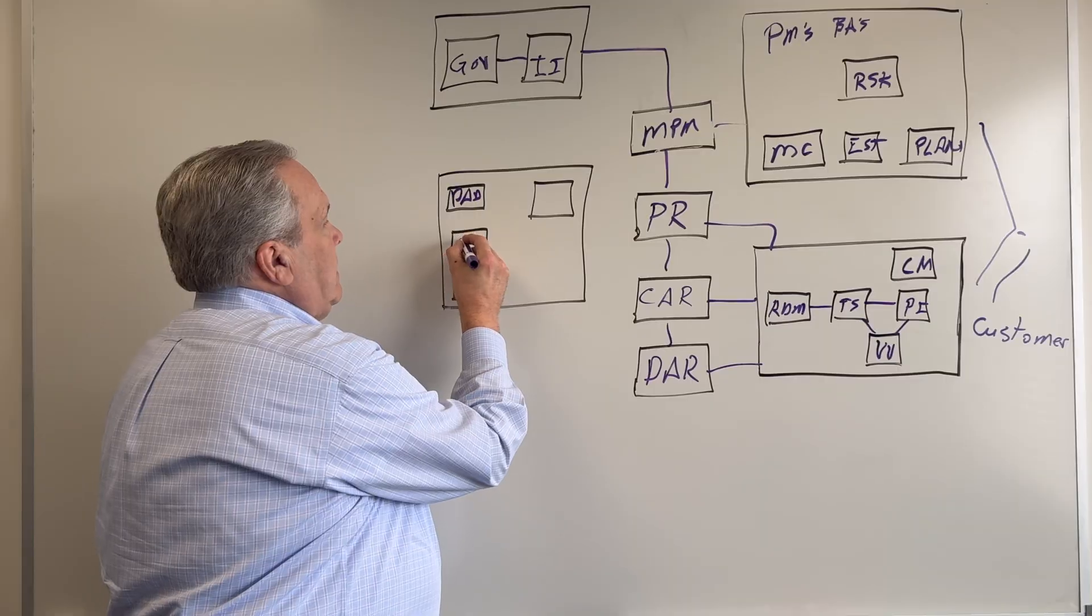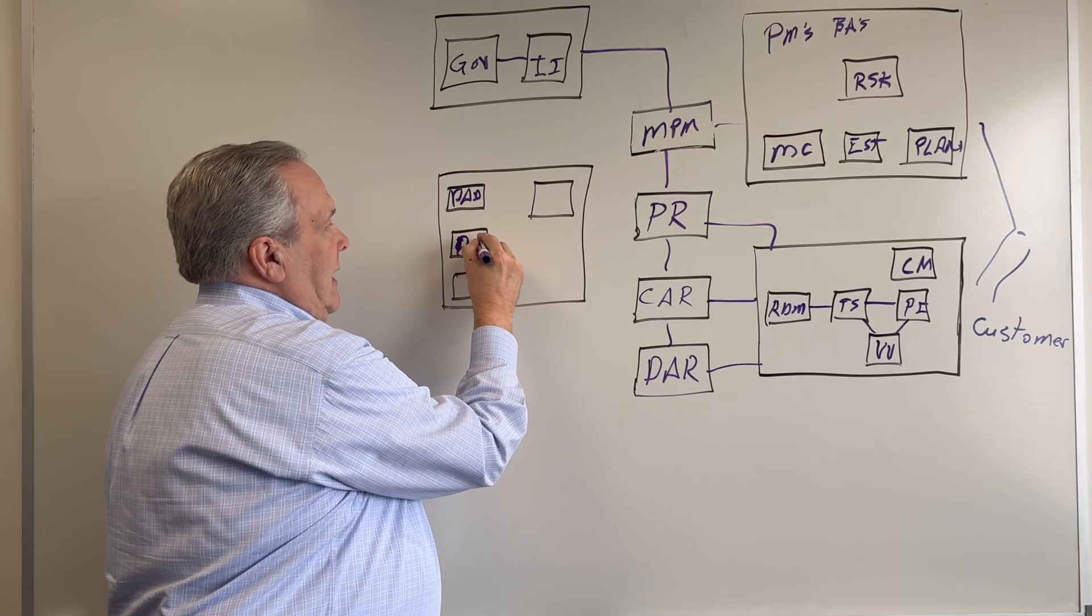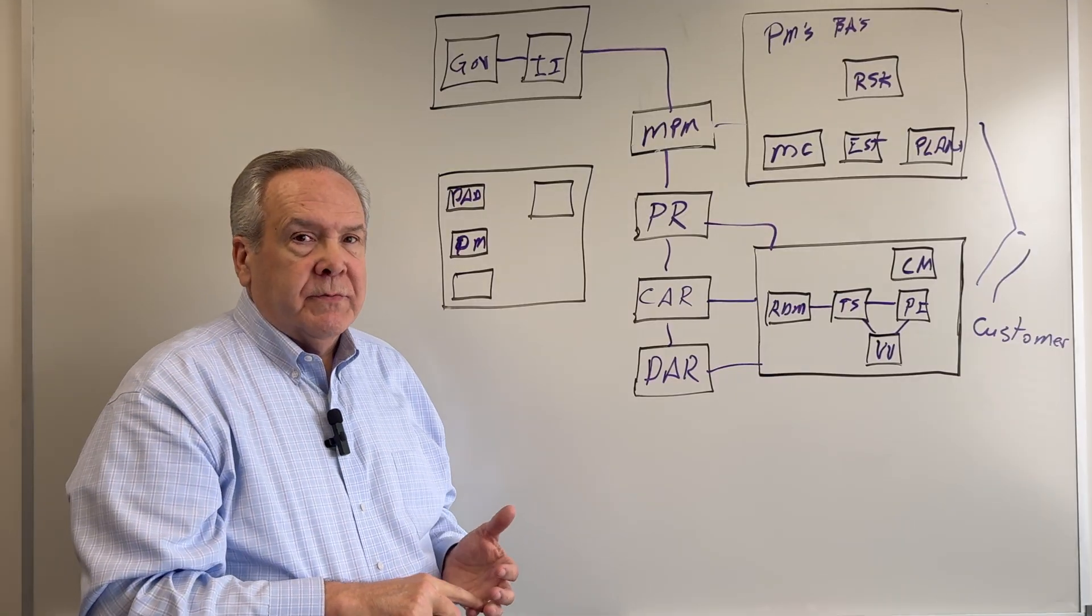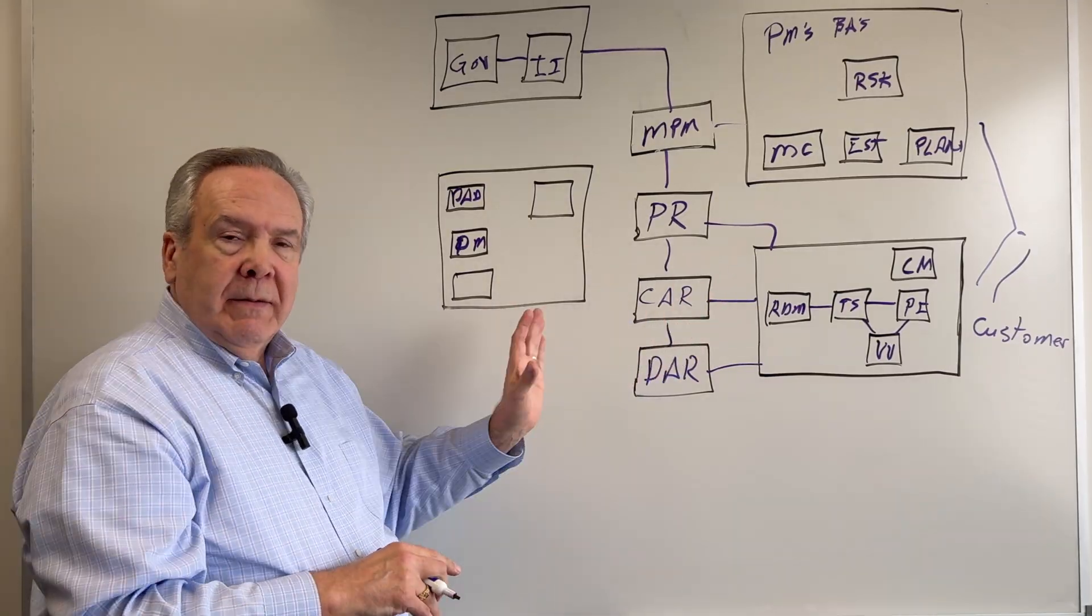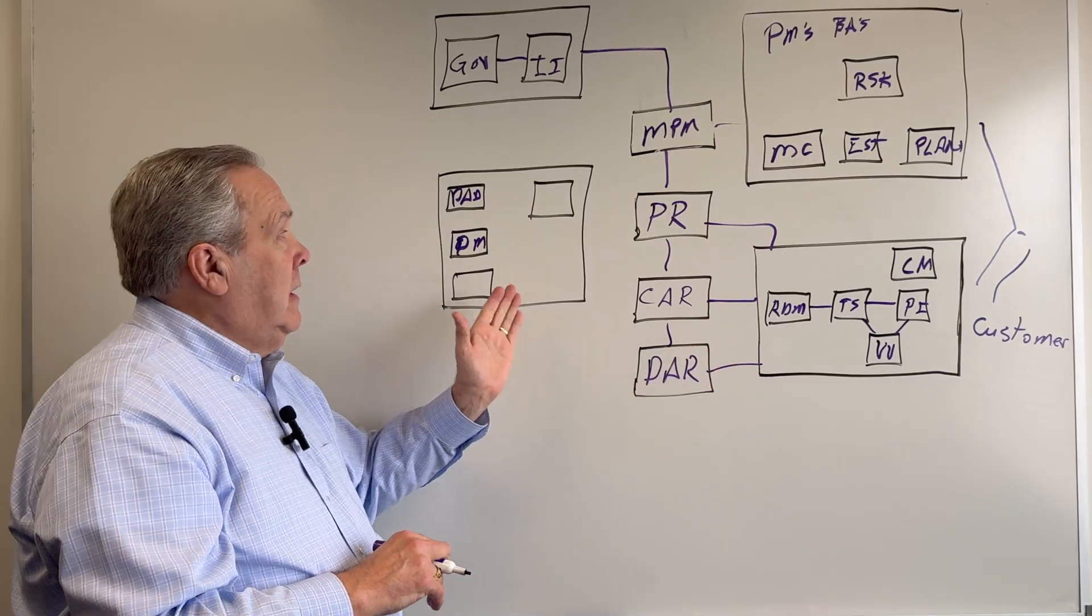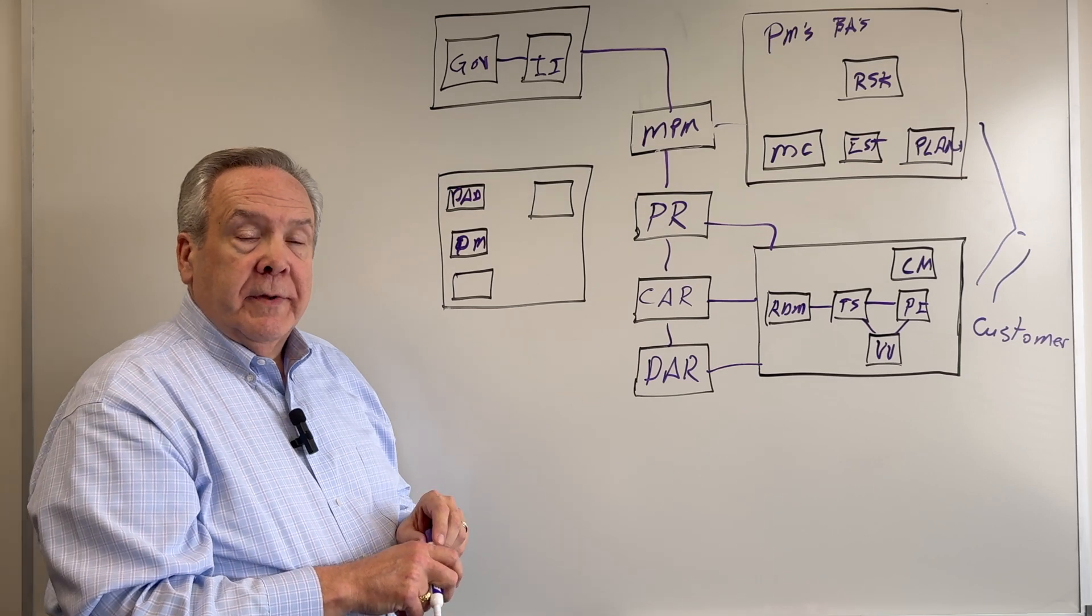The next one is, and CMMI calls this PM, but it's really PCM, which stands for process change management. So anytime, and CMMI is all about process improvement, anytime there's a process improvement that has to take place, it typically goes through your PCM or PM area.